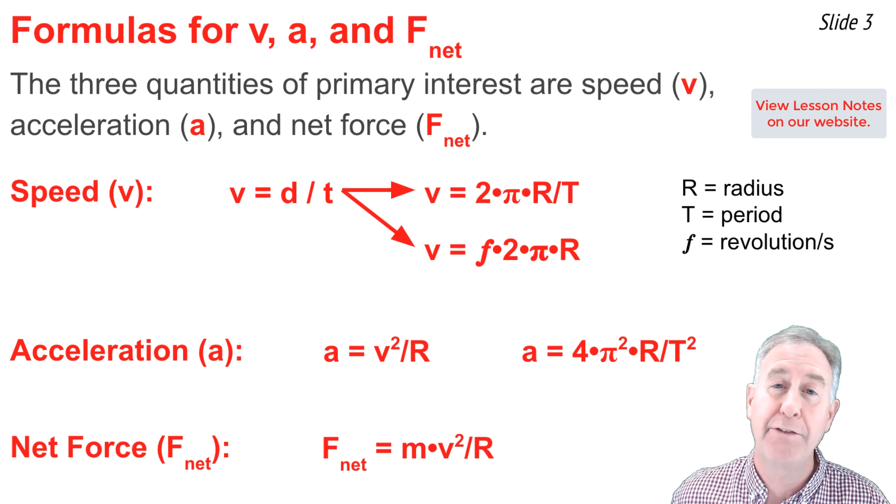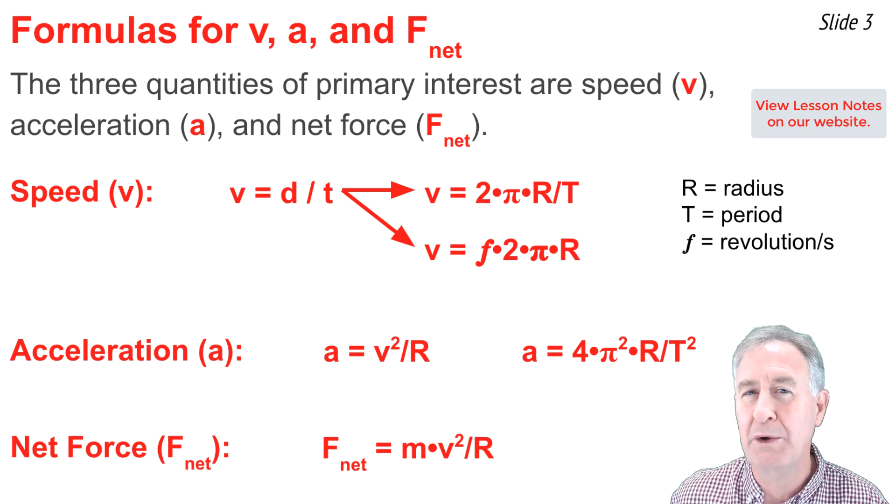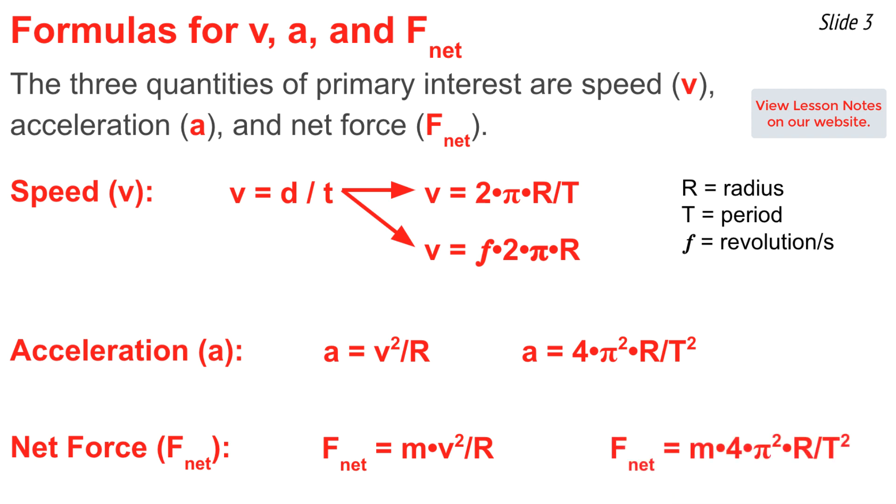When it comes to calculating net force, it's always f net equal m times a. But a for moving in circles is v squared over r. So f net equal m times v squared over r. But sometimes we don't know the speed. So in such cases, we need to use knowledge of the radius and the period and the formula that you see right there in order to calculate the f net. That would be m times 4 times π squared times r divided by T squared.